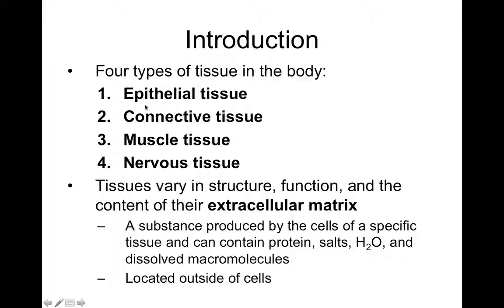All of these tissues vary in their structure, function, and content. Although we call these tissues, and all tissues have at least one type of cell, different tissues can have lots of cells or not so many cells — maybe one cell type or many cell types. These tissues can also have other components like fibers and ground substance, and it's the proportion of these components that really defines what these tissues are.